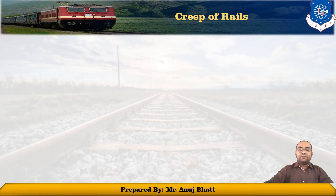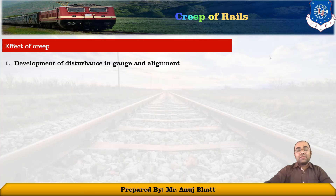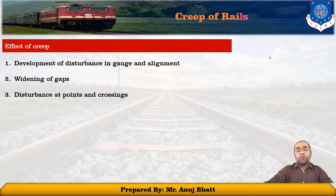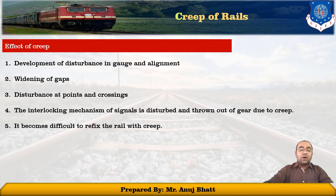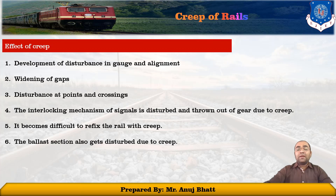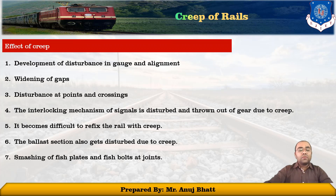The effects of creep include: development of disturbance in the gauge and alignment, widening of gaps, disturbance at points and crossings, the interlocking mechanism of signals being disturbed and thrown out of gear due to creep. It also becomes very difficult to refix the rail with creep. The ballast section gets disturbed because it is directly connected with the sleepers, which are subjected to the creep effect. Additionally, fish plates and fish bolts get smashed at the joints.